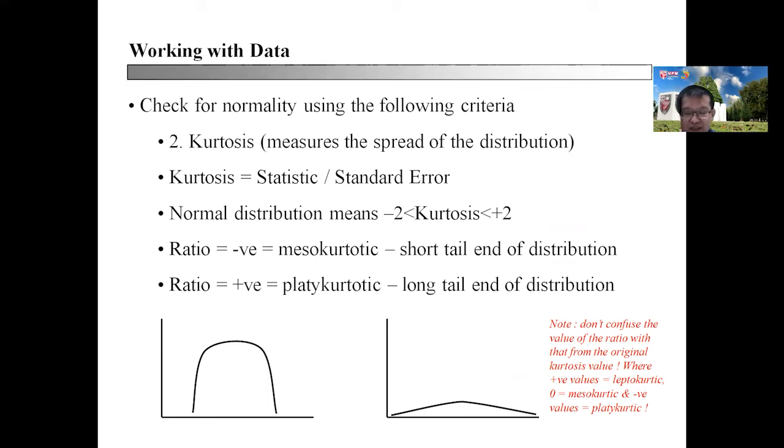When the ratio is negative, you have mesokurtotic, which means the value indicates a short tail end of distribution. When you have a positive ratio, that means it's platykurtotic, meaning you have a long tail end of distribution. These will be some of the values you need to depend on to see whether your data is normally distributed or not.